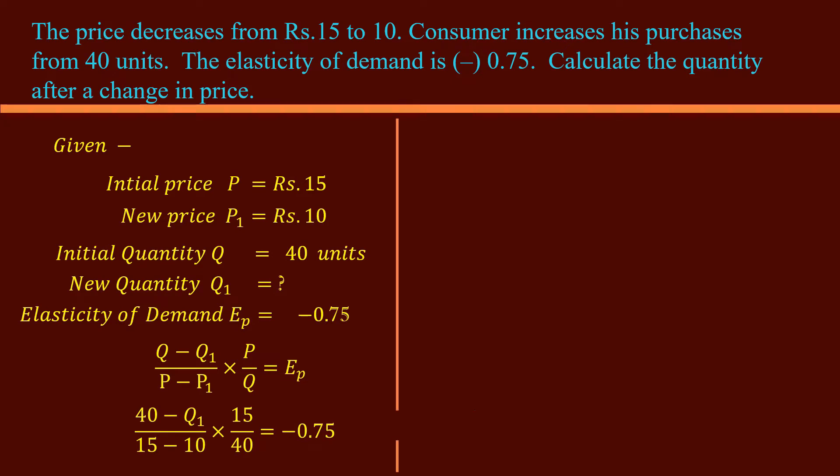Let me explain the steps clearly. Multiply 40 minus Q₁ with 15, keep it in the numerator. Subtract 10 from 15. Multiply 5 with 40, keep it in the denominator. Multiply 40 with 15: 600. Multiply Q₁ with 15: 15Q₁. Place them in the numerator. Multiply 5 with 40: 200. Place it in the denominator. Equal to –0.75.